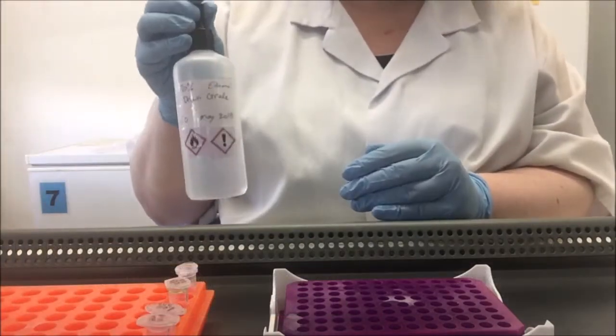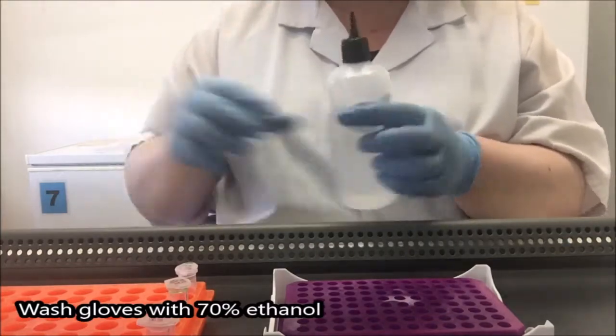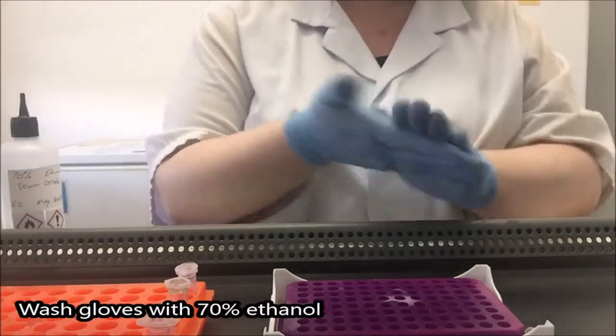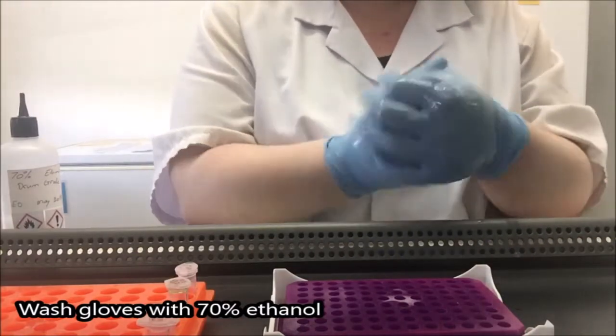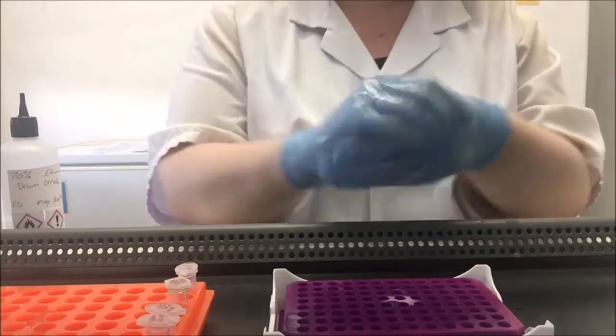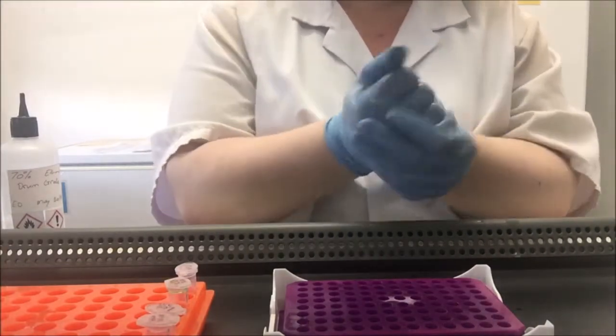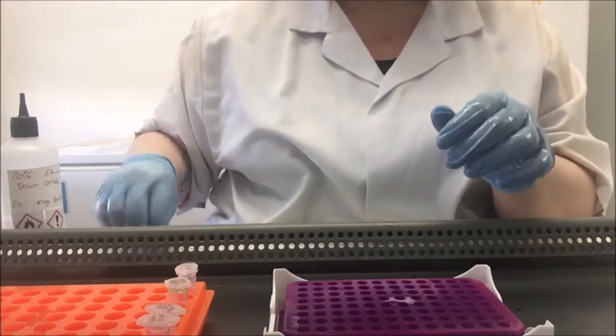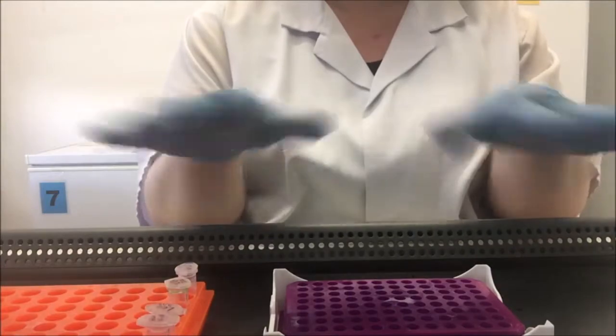The first thing I'm going to do is wash my gloves using 70% ethanol, because my gloves are not actually sterile. And this will get off any bacteria or DNA that I've picked up on my gloves while I was preparing my work area or that might have been present in the box of gloves. So ethanol will evaporate fairly quickly. I just give that a minute to do that.